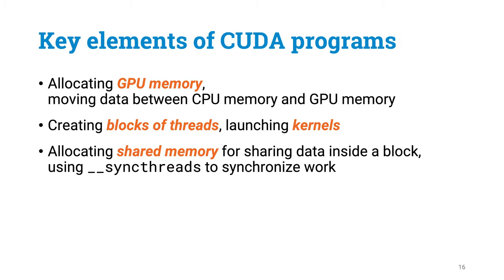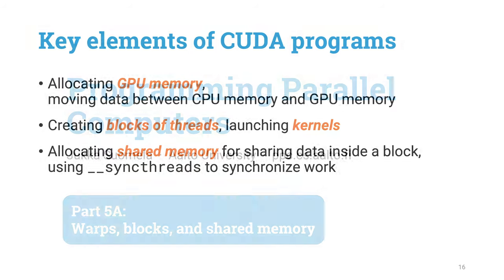So now we have seen all the key primitives that we need to use in everyday CUDA programs. We can allocate GPU memory and move data between CPU memory and GPU memory. We can create blocks of threads and launch a kernel. We allocate shared memory and use it to share data between threads of a block, and we can use syncthreads to synchronize our work. In the next part, we will start to reason about what happens inside the GPU — how does the GPU execute our code, how much parallelism we will get, and how to reason about the performance of our code. See you soon!